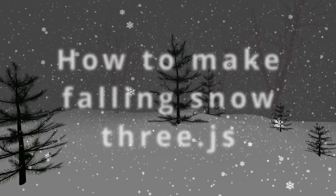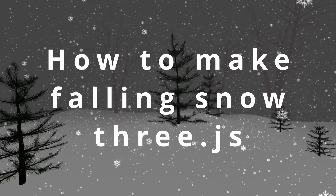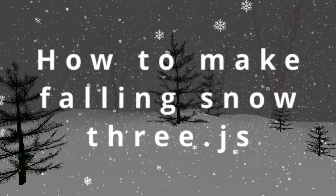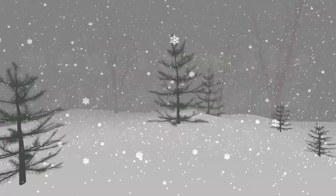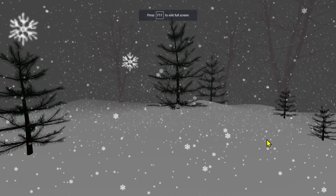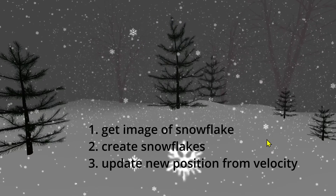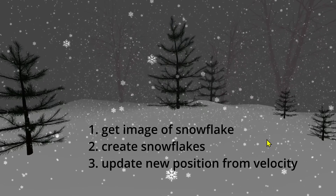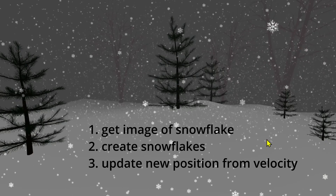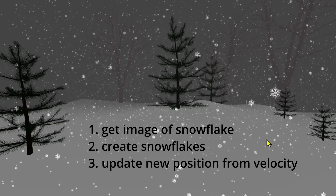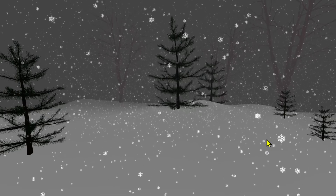In this video we're going to learn how to make falling snow using particles in Three.js. To make this project we need to get an image of a snowflake, make the snowflakes, describe their position and velocity, and then update their new position.